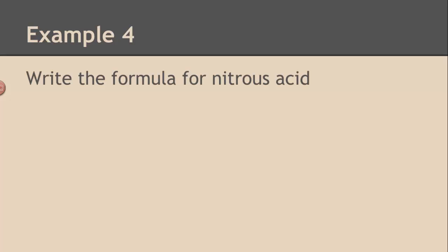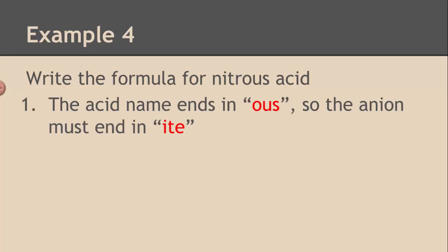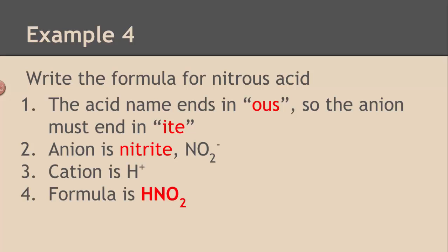So for example, nitrous acid. Nitrous acid is what we want to write. So first we have to figure out the anion. Well, the acid name ends in -ous. That means the anion ends in -ite. So the anion is nitrite, NO2-. We put that with the cation H+. We do the crisscross method, we get HNO2. That's nitrous acid.